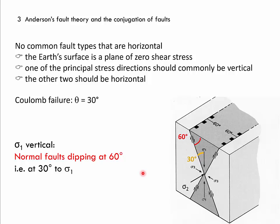In this situation, if sigma 1 is vertical, then sigma 3 and sigma 2 must be horizontal. Sigma 2 plots along the intersection line of the two conjugate faults, and it is the only principal stress vector that actually lies on both of these conjugate faults.